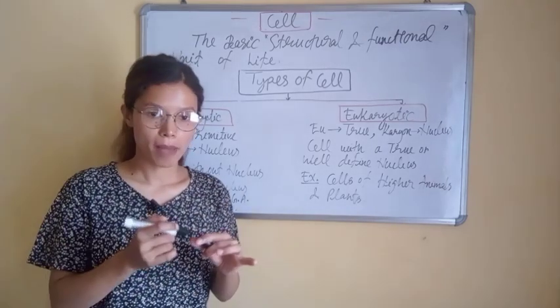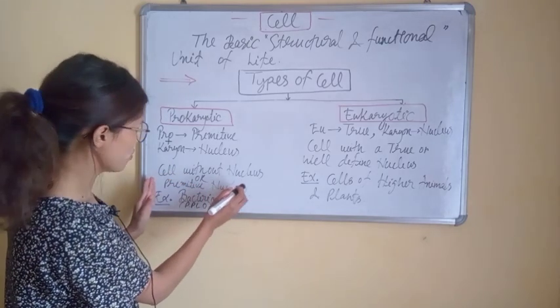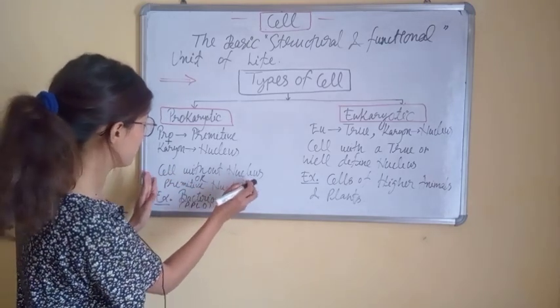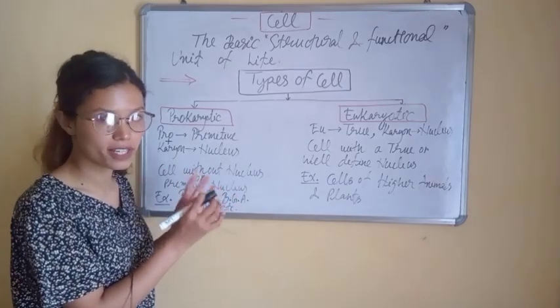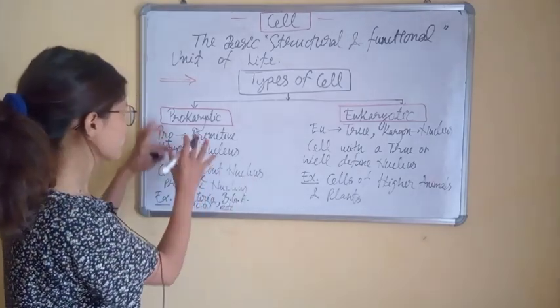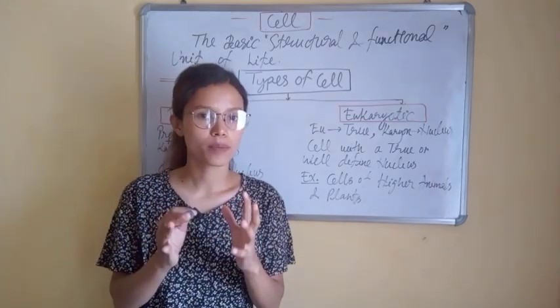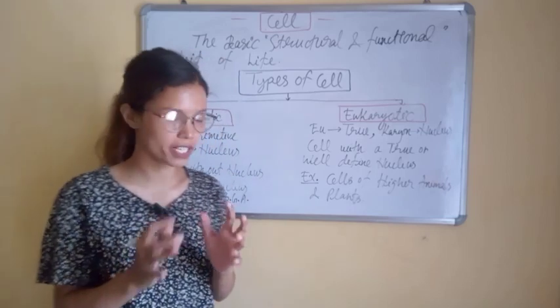Remember, there is no nucleus, or we can say there is a nucleus present but a primitive type of nucleus, not a true nucleus. We call the nucleus of prokaryotic cells a nucleoid or incipient nucleus.